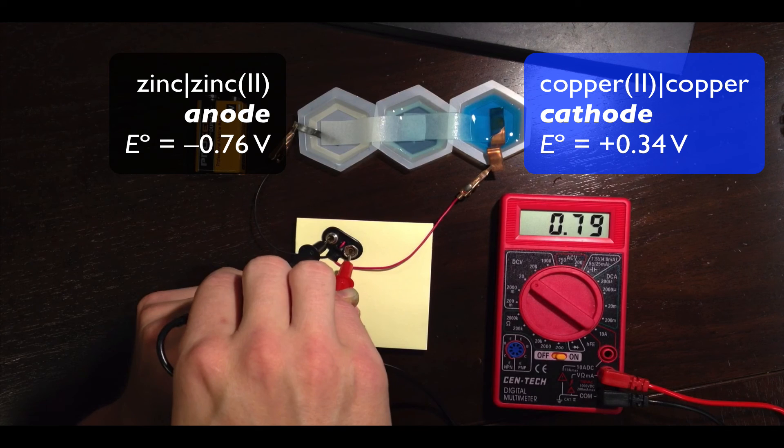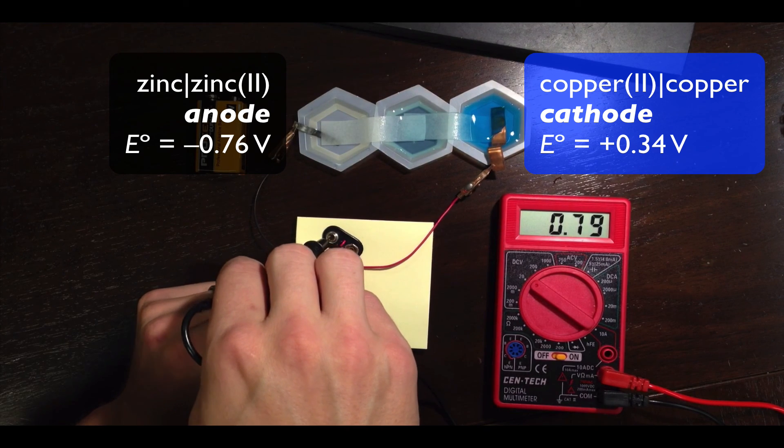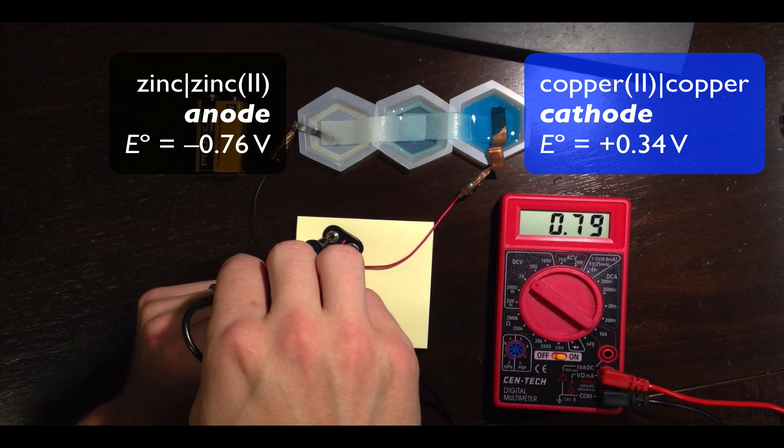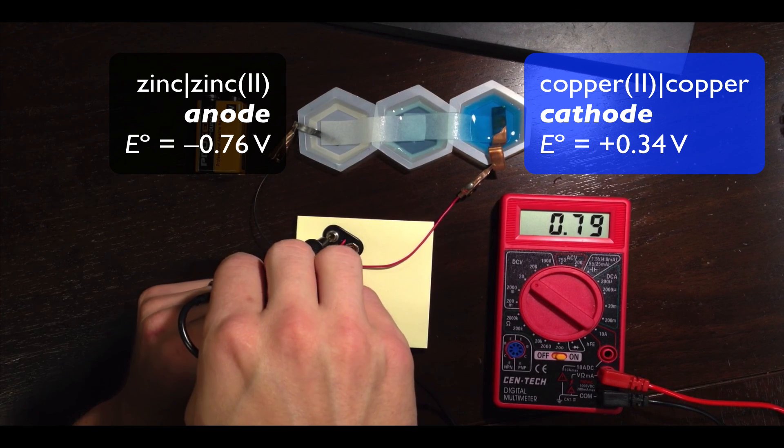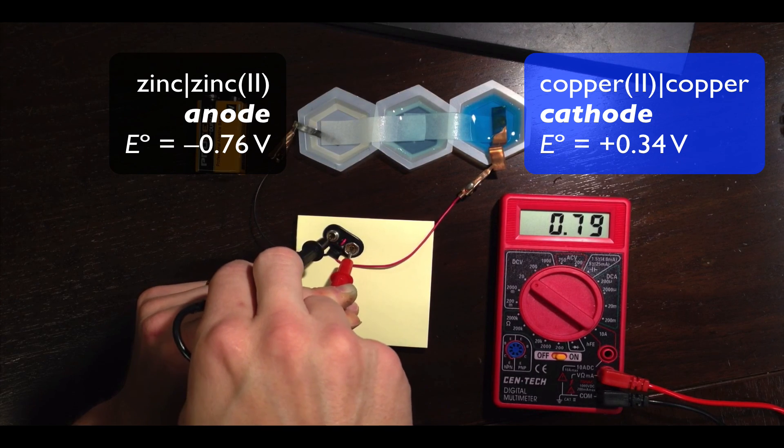All that said, if you observe a negative cell voltage, you can also realize that galvanic cells always have positive voltages. And so if you get a negative number, just throw away the negative sign as the magnitude of the voltage will be the same no matter which way the leads are connected.